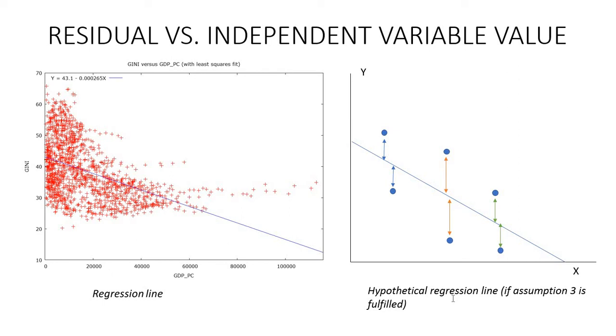So this is some hypothetical regression line if assumption three is fulfilled. You have error terms, the distances between empirical value and predicted value of Y, and those are equal. So this distance is equal to this distance. This distance is equal to this distance, and so on. So when you add all of those distances together, the average value will be equal to zero.